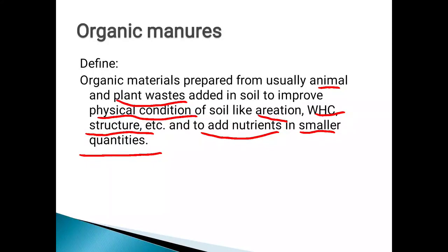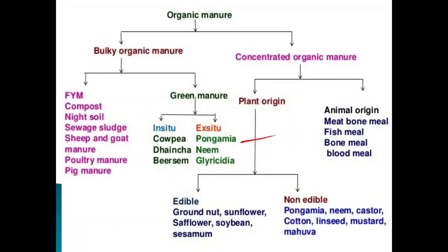Classification of organic manures: we can classify organic manures as bulky and concentrated organic manures. Bulky means in more quantity, and concentrated means in appreciable amounts — that is, more than just a small proportion.